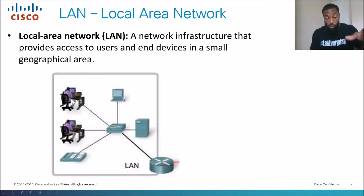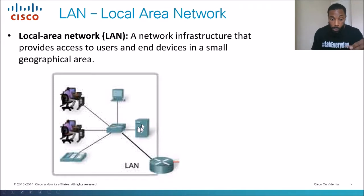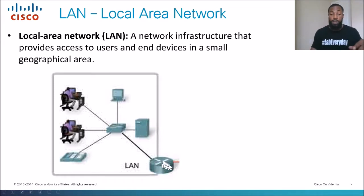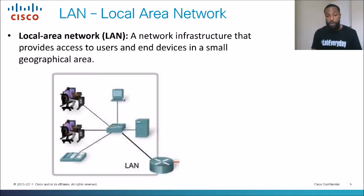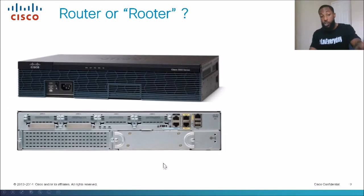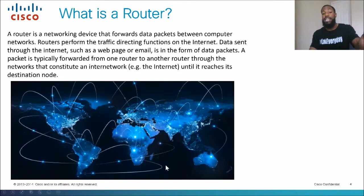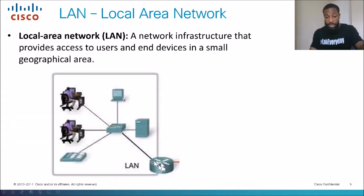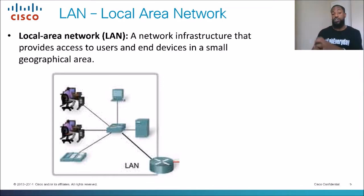They're all connected to this local area network. We've got a server, a switch, and this little hockey-puck-looking thing — that would represent a router. That is what a router would look like on a network topology or network map. This is the logical view of what a router looks like. When you're looking at these network topologies, you're going to see they look like this little hockey-puck-looking thing, and they typically sit at the edge of your network.